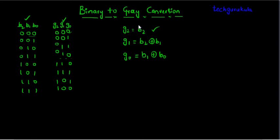So now if we are given b2, b1, b0 bits we can get g2, g1, and g0. So this is from a 3-bit binary to gray conversion. Now we need to look at 4-bit binary to gray code conversion.